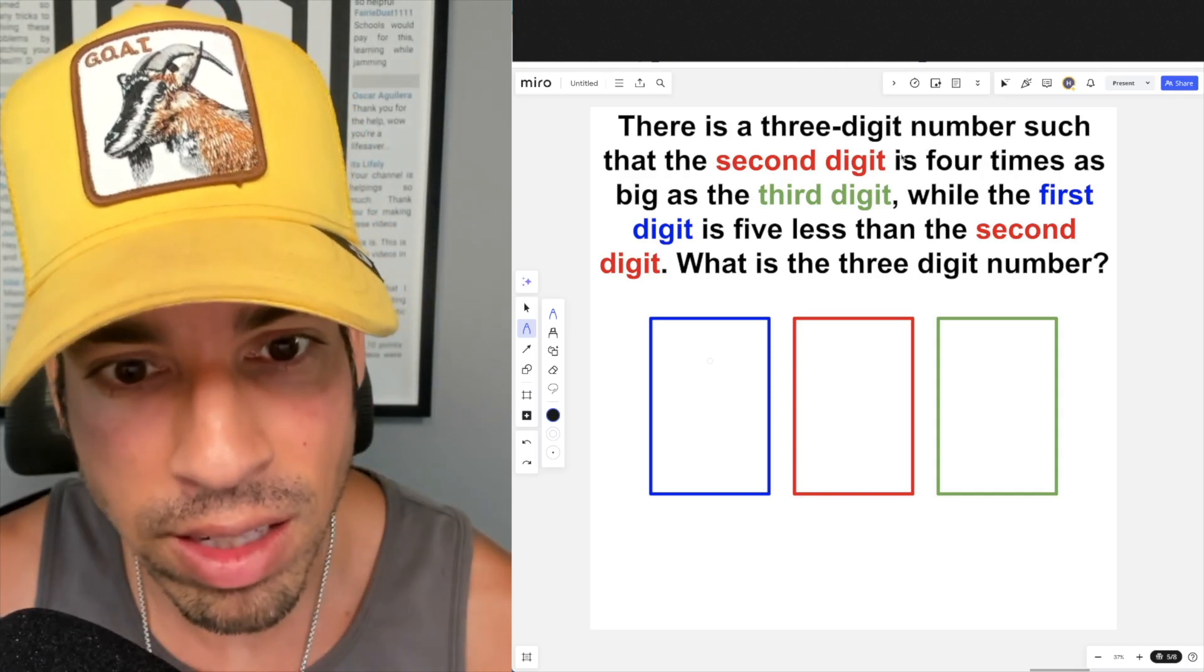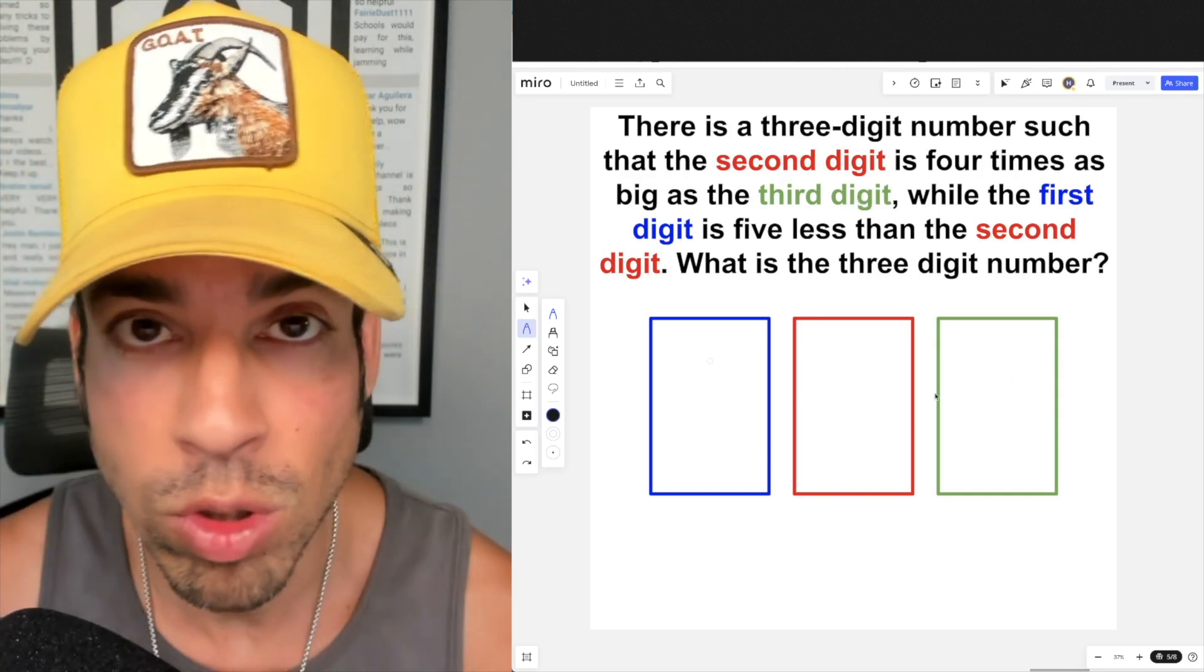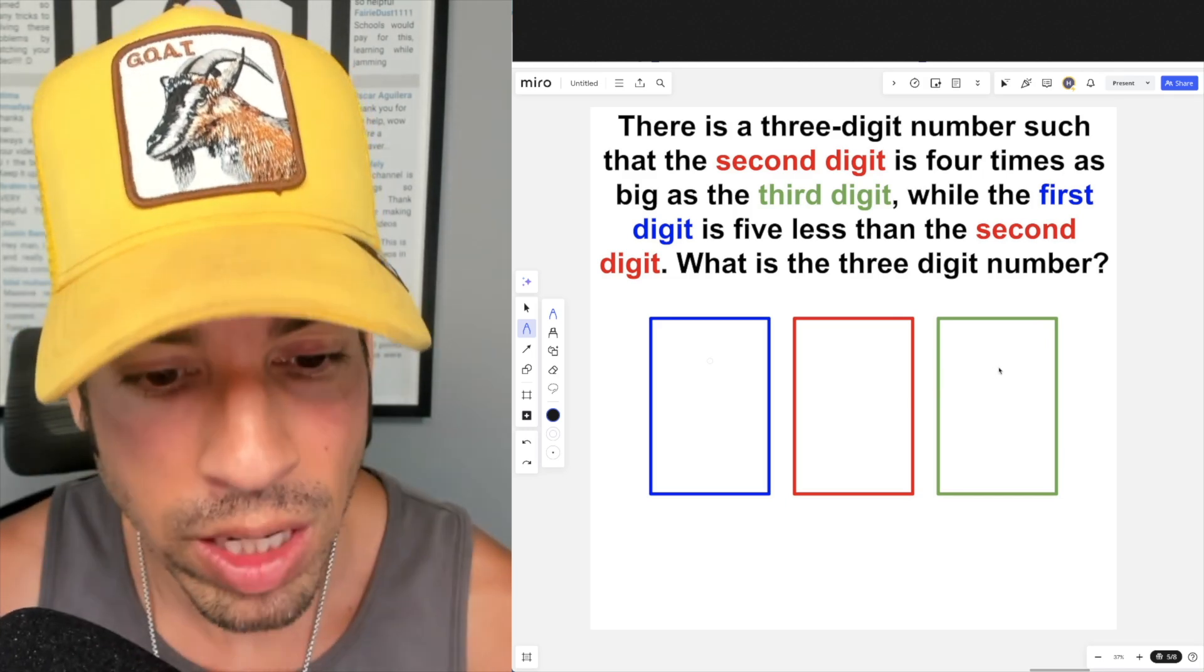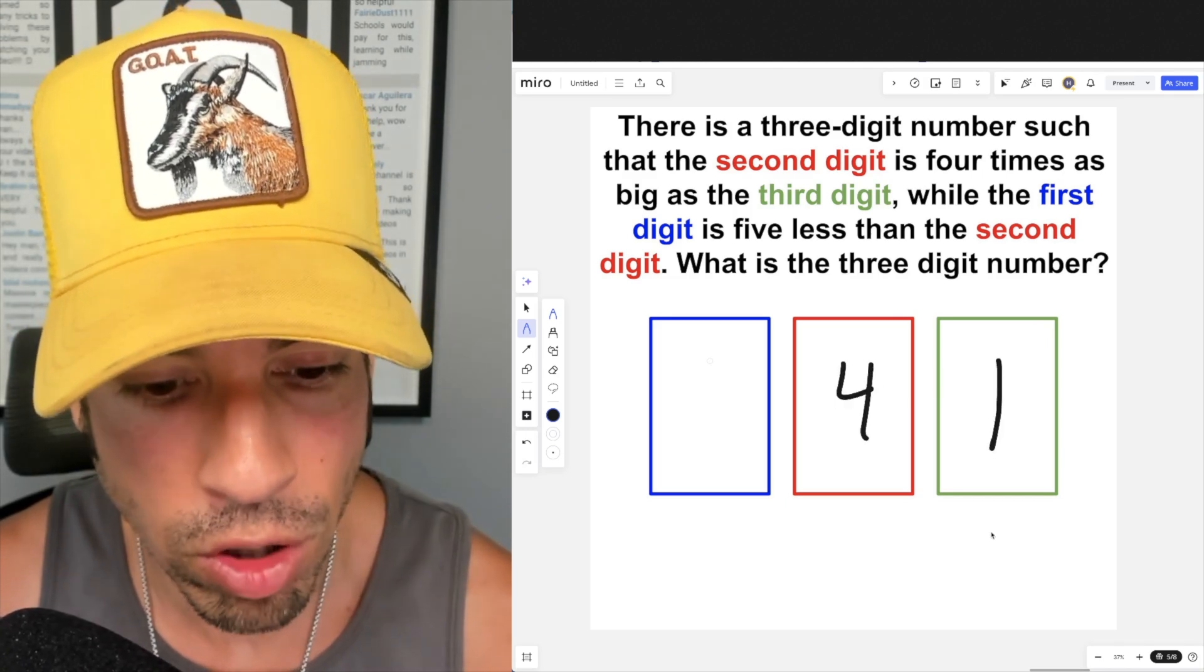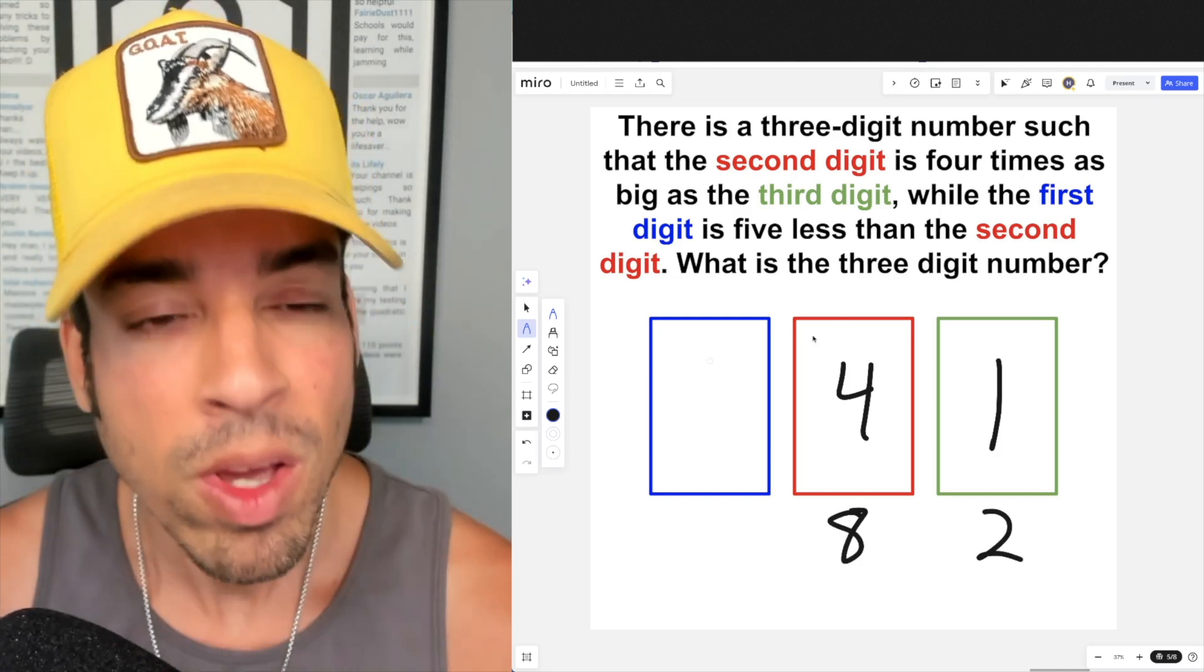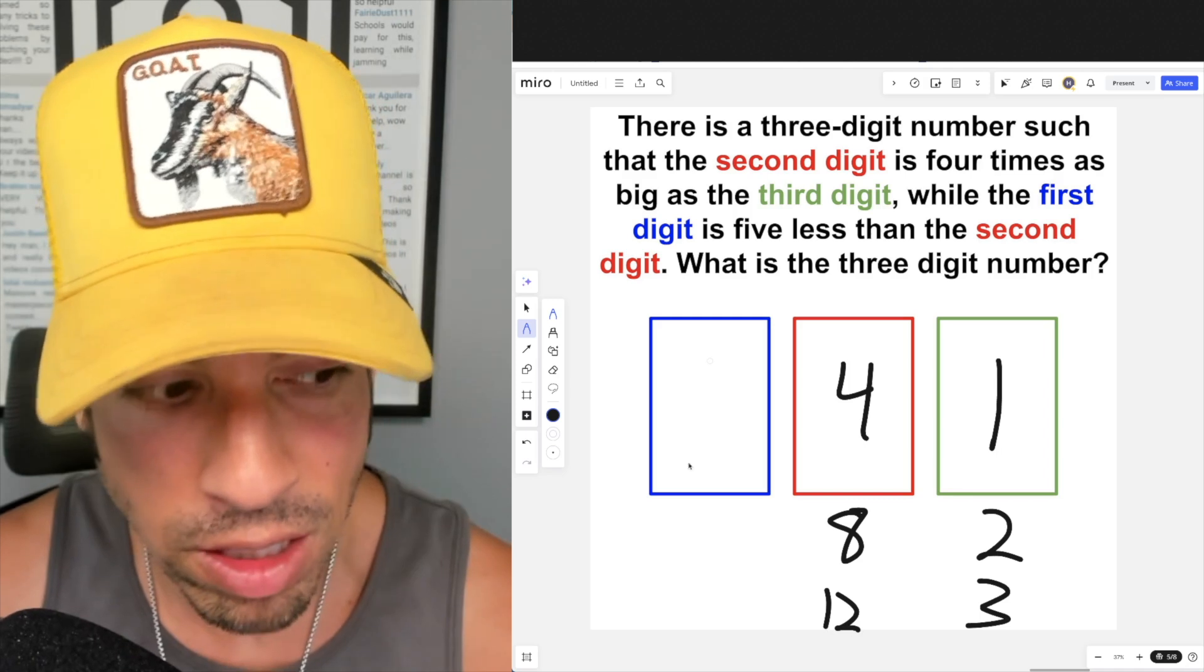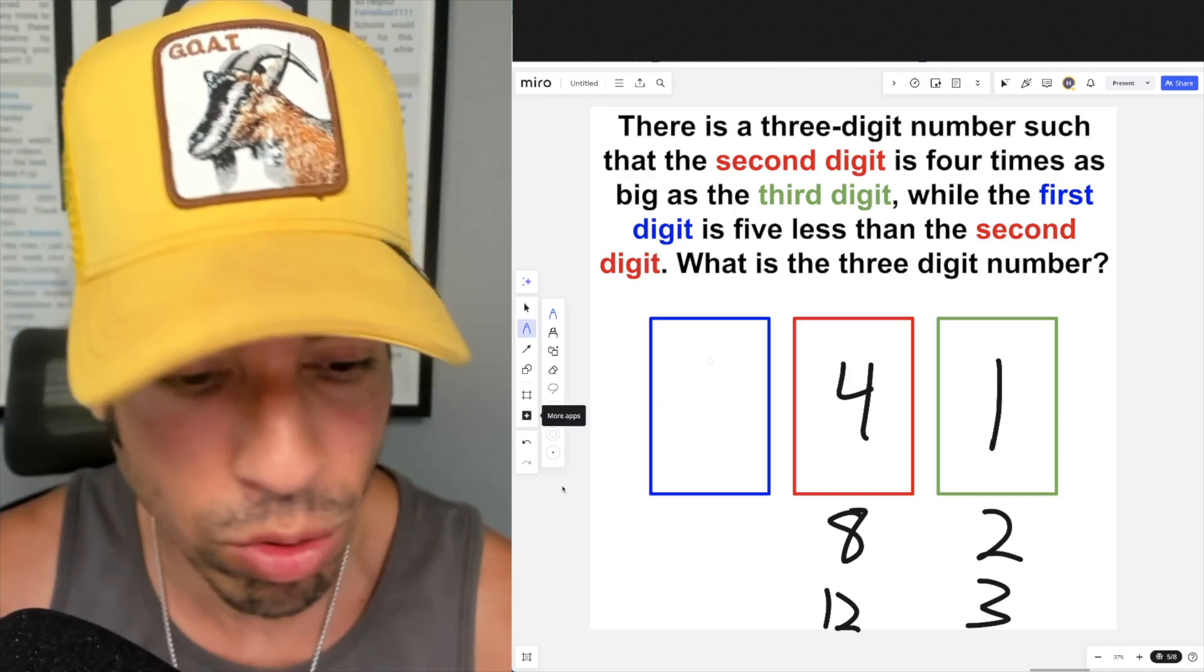For example, I see that the second digit is four times as big as the third digit, so that gives us two different potential options. We could have one here and four here, or we could have two here and eight here. There's really nothing else that's going to work. If we have three, that would be 12, and that's beyond a digit. A digit is anything from zero through nine, so we really only have two options.